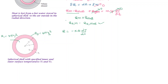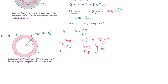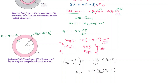Integrating the Fourier equation for the sphere with variable area, we get: Q·(1/r1 − 1/r2) = 4πk·(T2 − T1). After simplification, the rate of radial heat transfer is: Q_r = 4πk·r1·r2·(T1 − T2) / (r2 − r1).